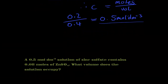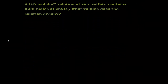Let's move on to one more question. A 0.5 mol/dm³ solution of zinc sulfate contains 0.08 moles of zinc sulfate. What volume does the solution occupy? We've been given the concentration — since it's in mol/dm³ — and the number of moles.